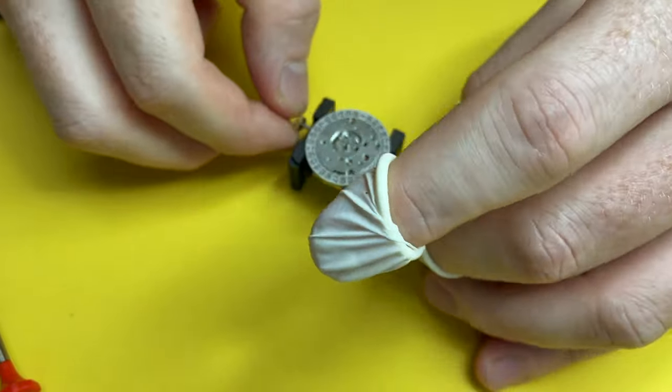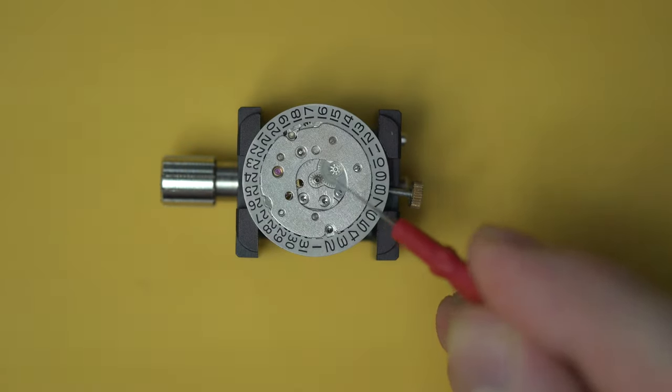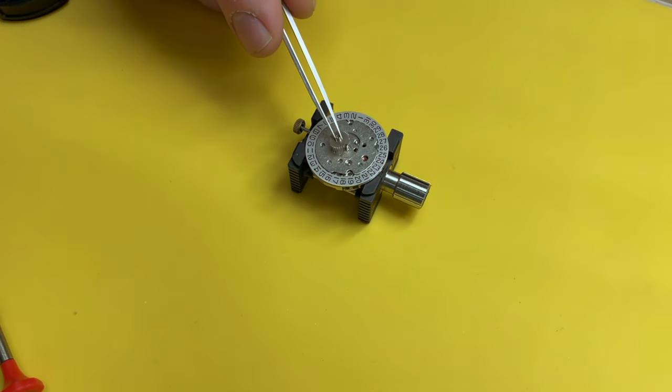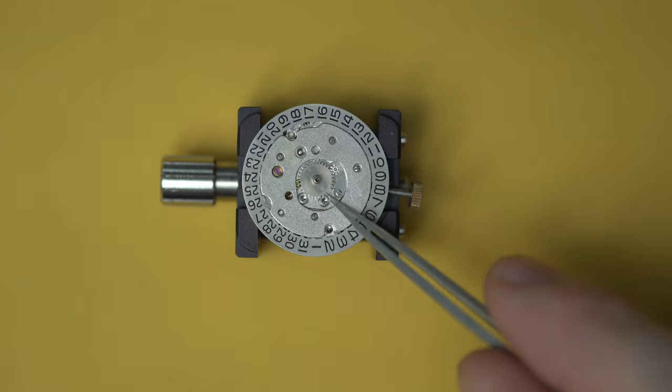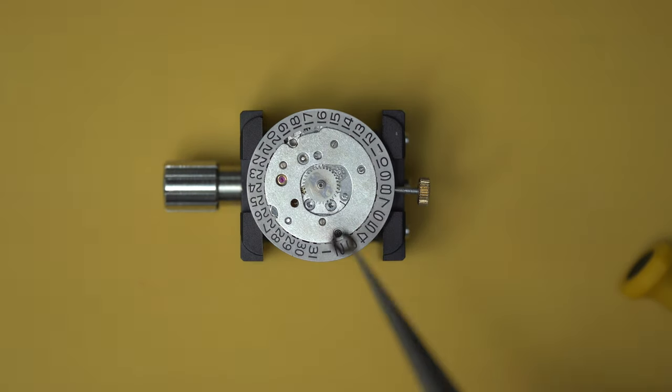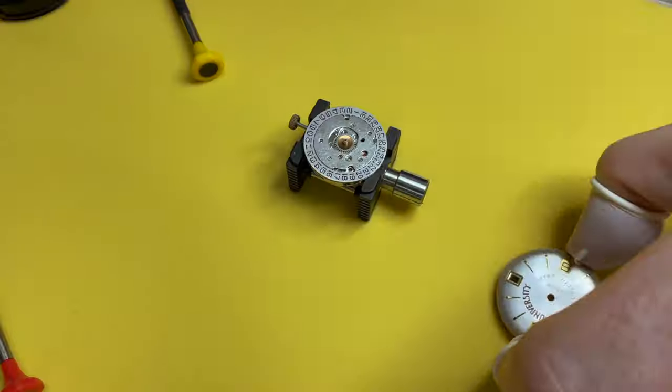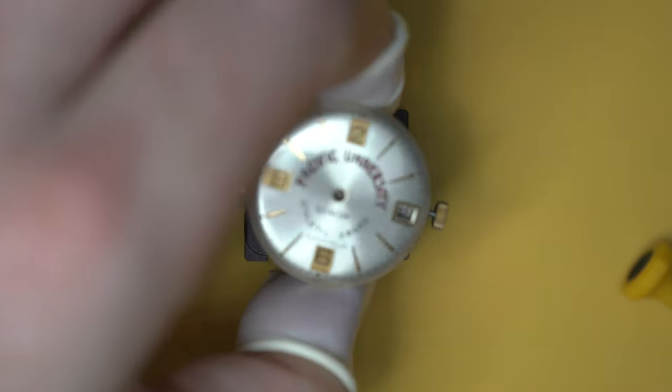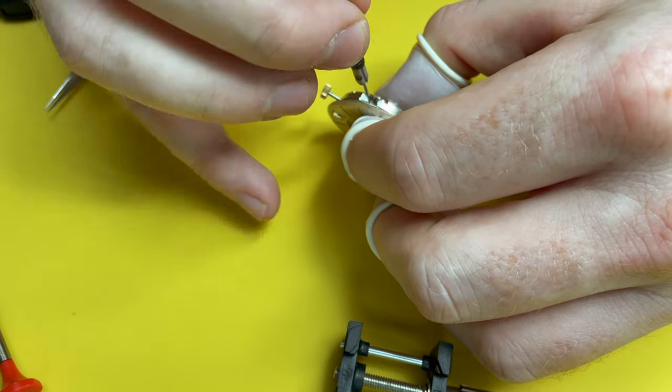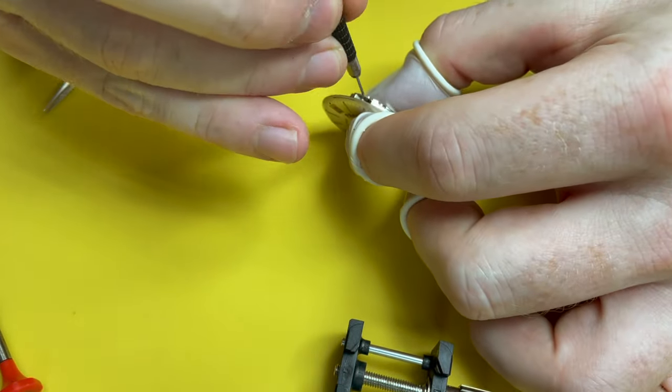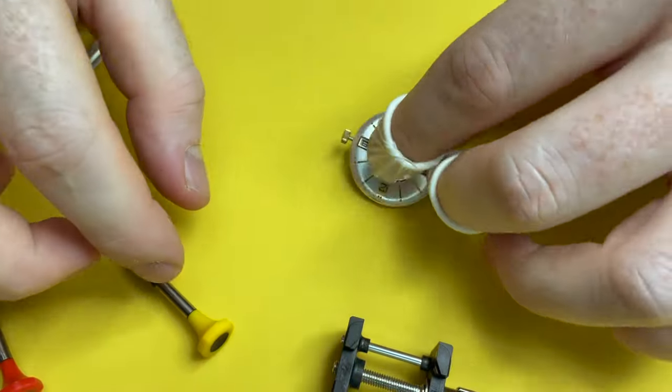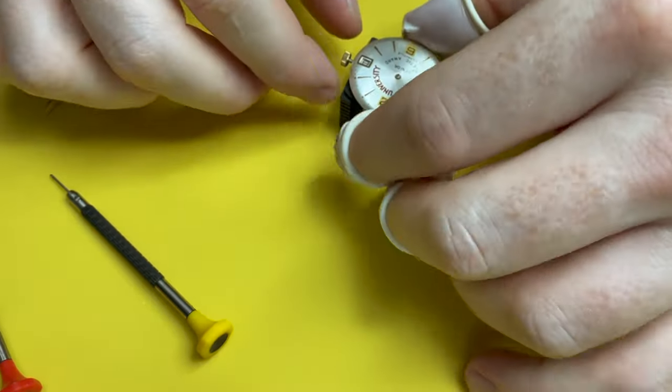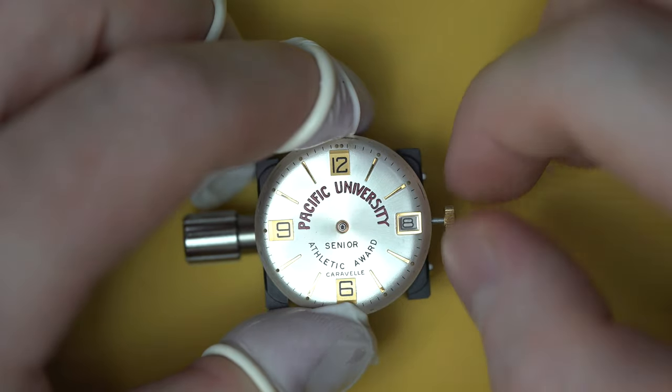So now, on to the remaining part. Flip the watch over again. Give the cannon pinion a little bit of 9010 oil. Put the hour wheel back on and the dial shim. And we can get this dial back on. And can I just say, I've said before, I'm not really a dial man, but this one. This one's my favorite. Out of the watches I have, this is my favorite. I like this one a lot. There's just something about it. I'm sure this watch has got a good story.